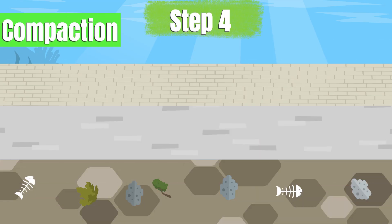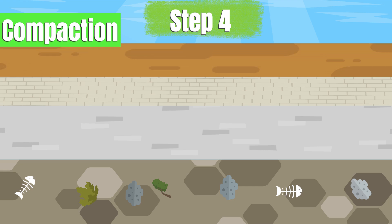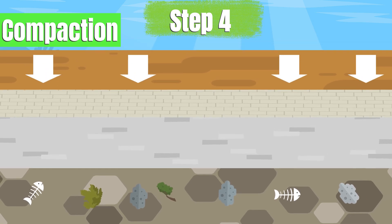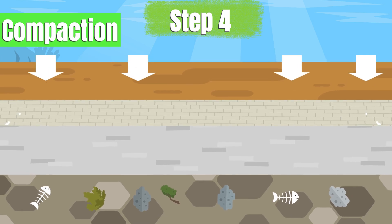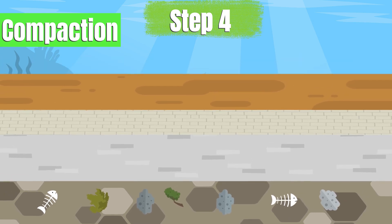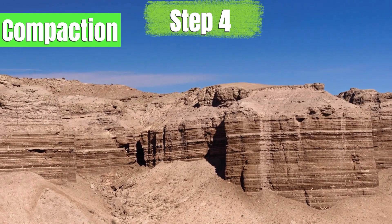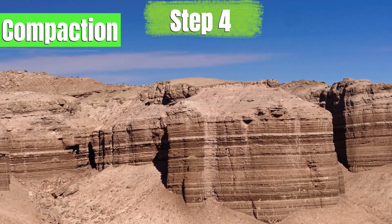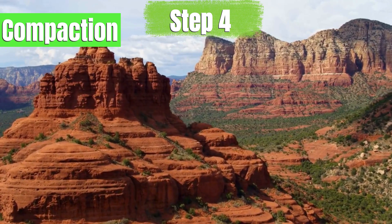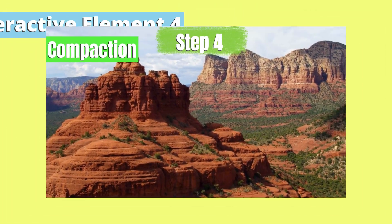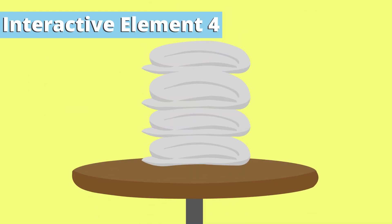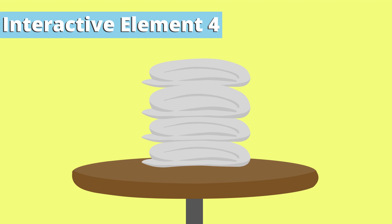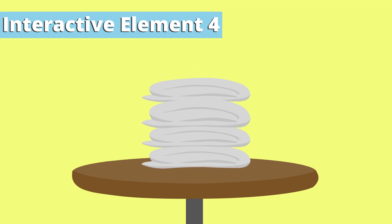Step 4: Compaction — squeezing the layers. Over time, as more layers of sediment build up, the weight of the upper layers presses down on the layers below. This pressure compacts the sediments tightly together, squeezing out the water and air between the particles. This stage is called compaction. Compaction is essential because it makes the layers denser, pressing the sediments and organic material into a tighter space. The more compacted the layers become, the closer they are to transforming into fossil fuels. Imagine stacking wet towels one on top of the other — as the stack gets taller, the towels at the bottom are squeezed tightly together. This is similar to compaction, where the weight of upper layers compresses the sediments below.